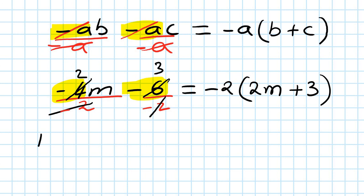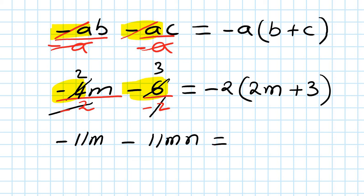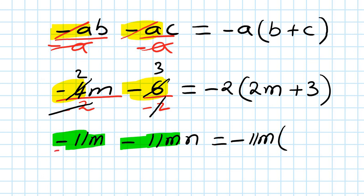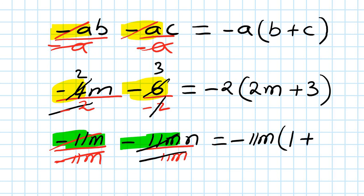Next: minus 11M squared minus 11MN. The common factor is negative 11M. So if I take negative 11M out, I divide by negative 11M. That cancels and leaves 1, so plus 1... and then that cancels with this, leaving N. Answer: -11M(M + N).